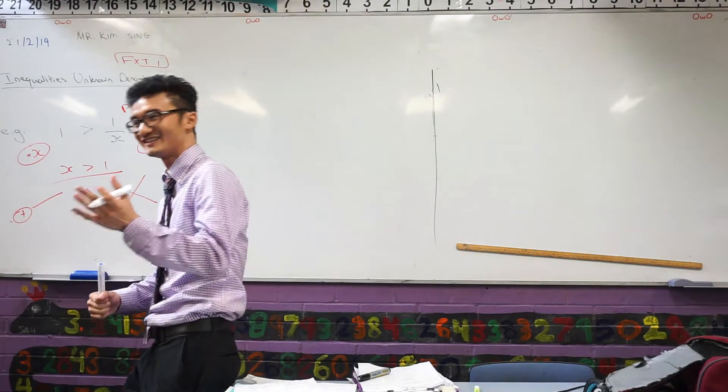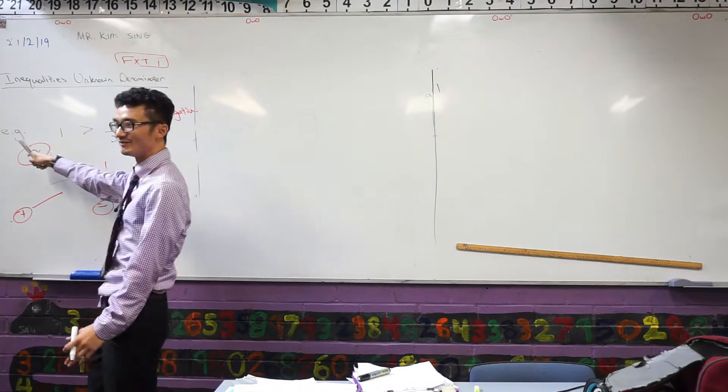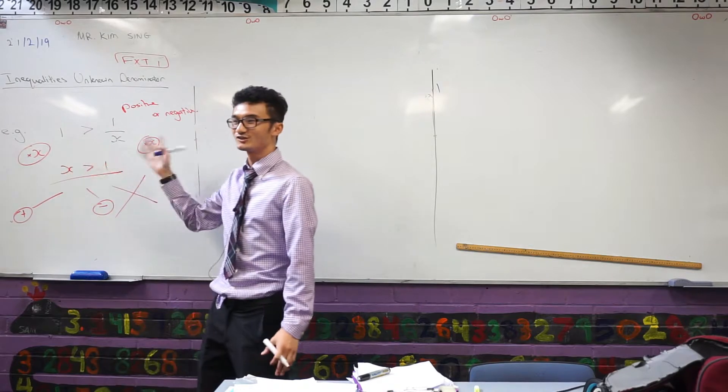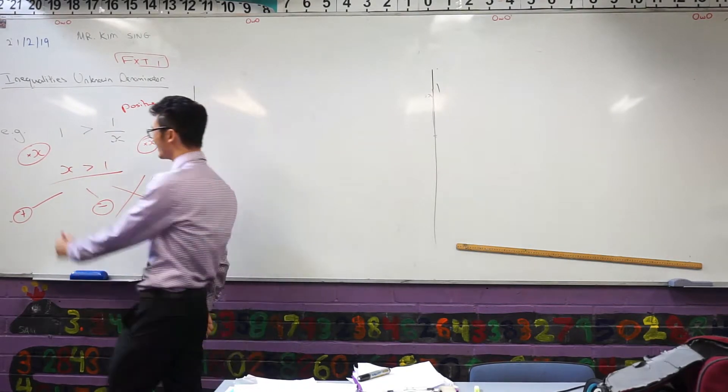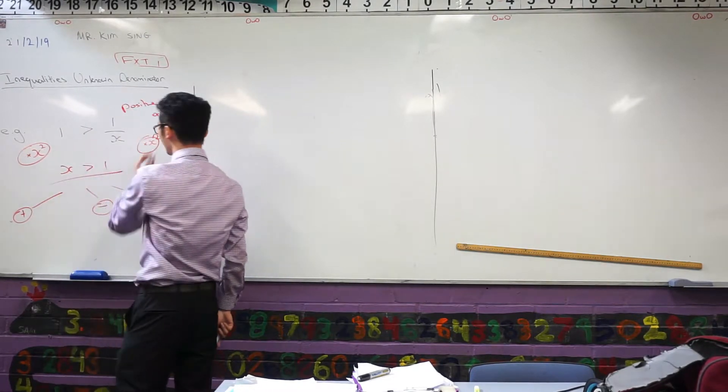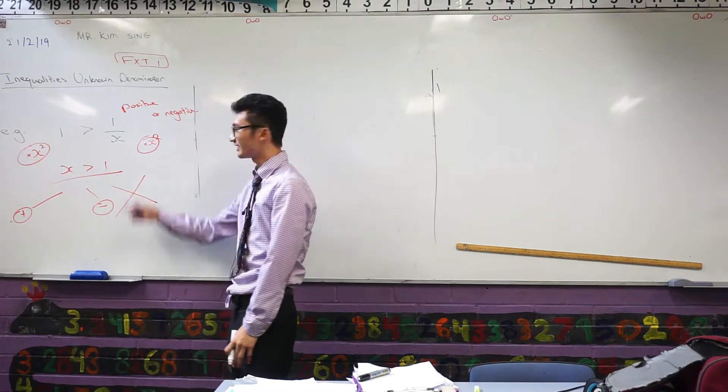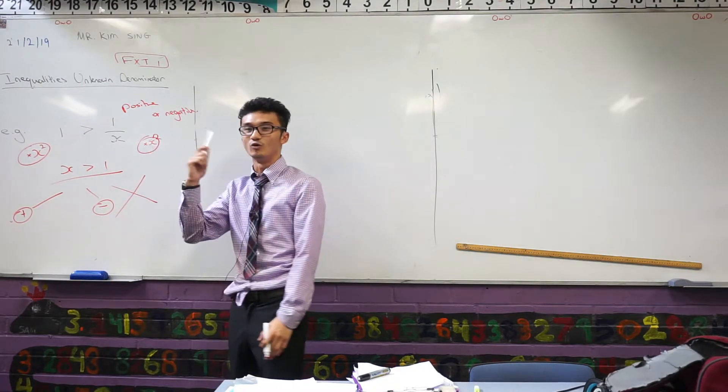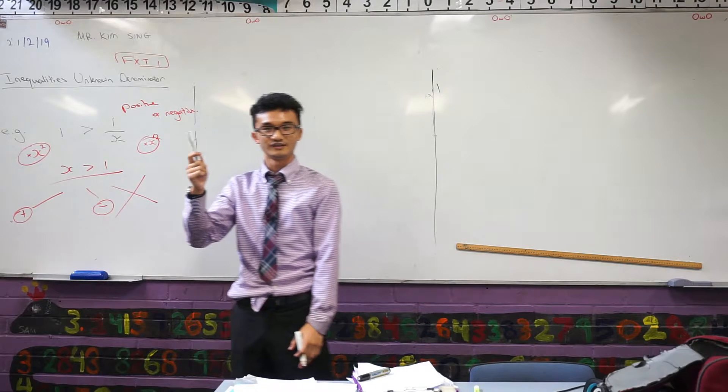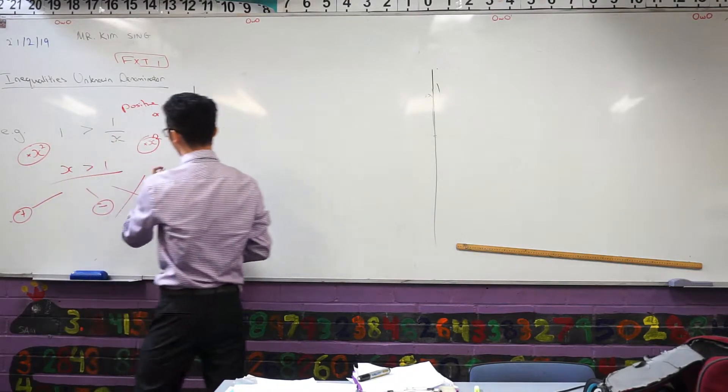x squared. x squared. Can you realize that? Maybe I can't multiply by x, right? Because x could be positive or negative. But if I multiply both sides by x squared, that immediately fixes my problem. Because x squared, it doesn't matter what you put in here, that will always be positive. Can you guys see that? Okay, so let's change this problem now. Let's go back over here.